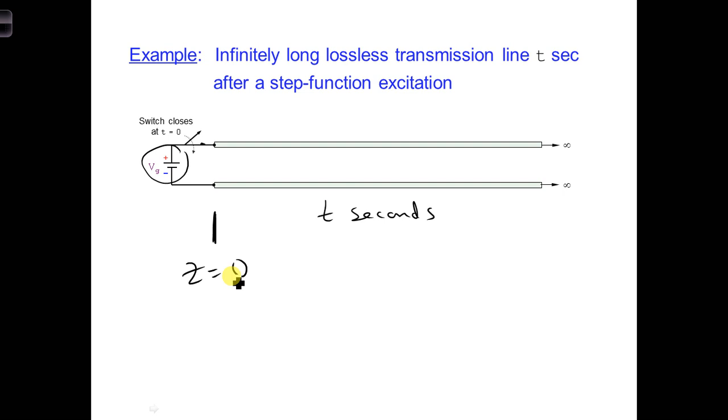As long as the switch is closed, Vg will still be the voltage at the beginning of the transmission line. And as time evolves, because the transmission line is lossless, the voltage wave should propagate down the transmission line at a constant amplitude.